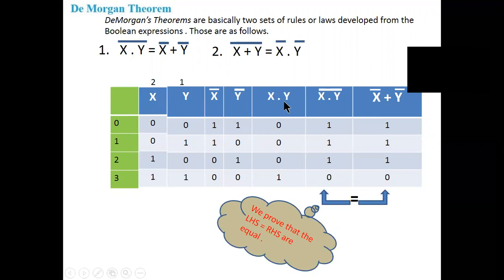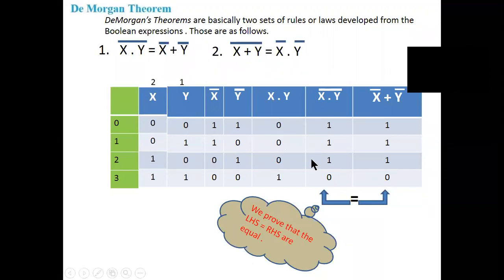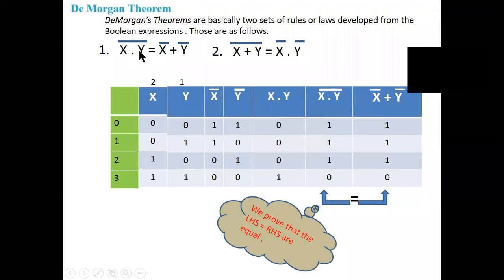What is x dot y whole bar? The complement of x dot y (which was 0,0,0,1) gives 1,1,1,0. Then for x bar plus y bar: 1+1=1, 1+0=1, 0+1=1, 0+0=0. So x dot y whole bar gives 1,1,1,0 and x bar plus y bar gives 1,1,1,0.